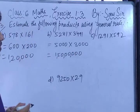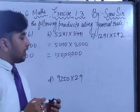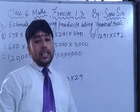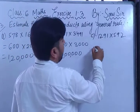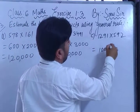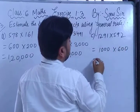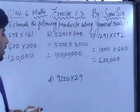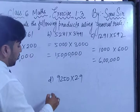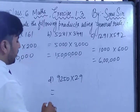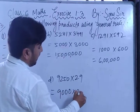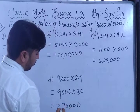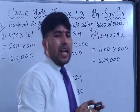For the C question, it's very easy. 1291 — one number is in the thousands and the other is in the hundreds. The nearby value of 1291 is 1000 and the nearby value of 592 is 600. For the D question, the nearby value of 9250 is 9000 and the nearby value of 29 is 30. So 9 × 3 = 27 with four zeros, giving 2 lakh 70,000.